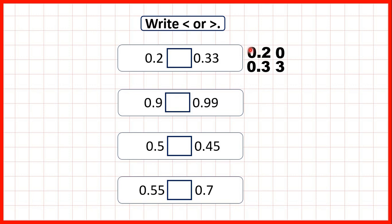We start by comparing the larger place values. Here both numbers have 0 in the ones, but if we go along to the tenths we have 2 tenths and 3 tenths. So we know straight away that the number with 3 tenths — 0.33 — is the larger decimal, and we didn't even need to look at the hundredths place value.